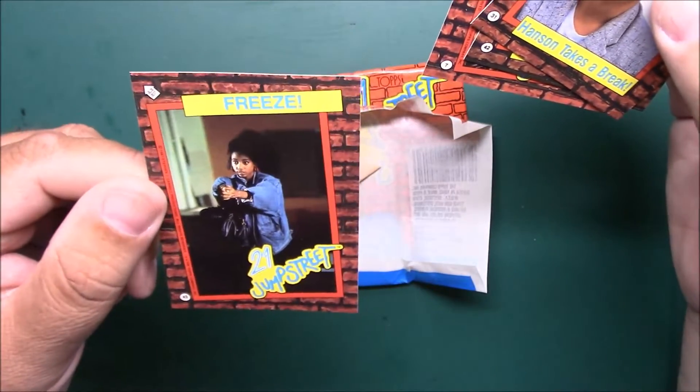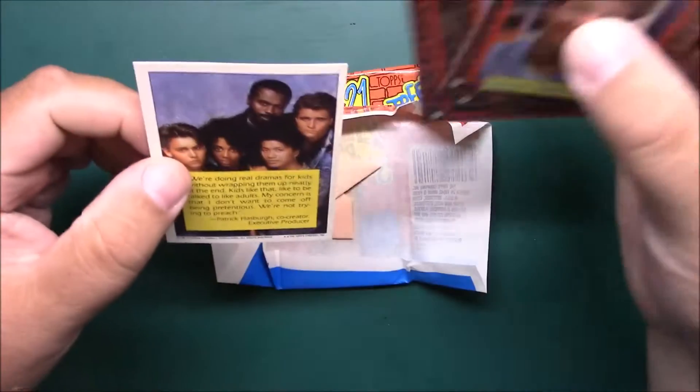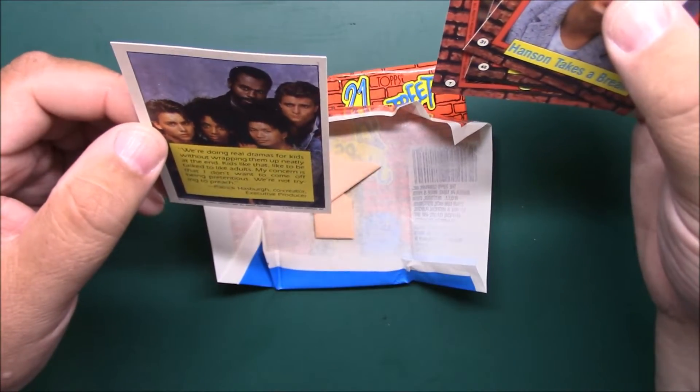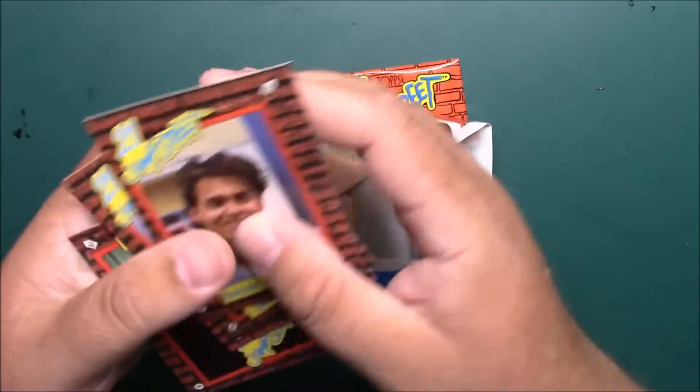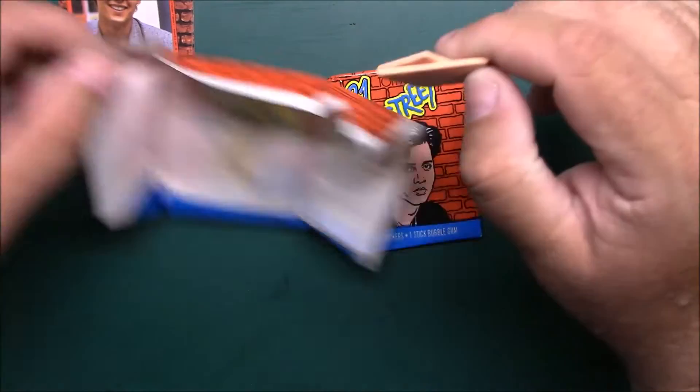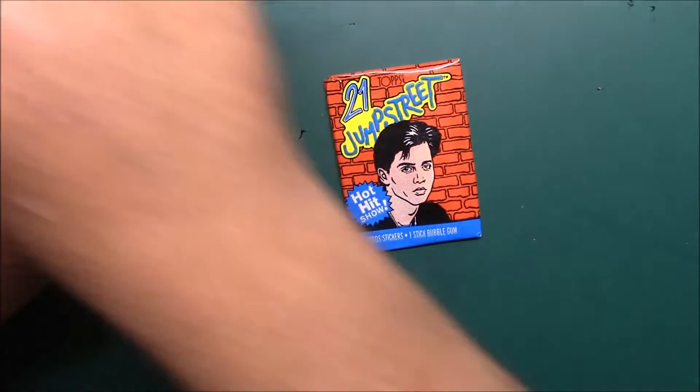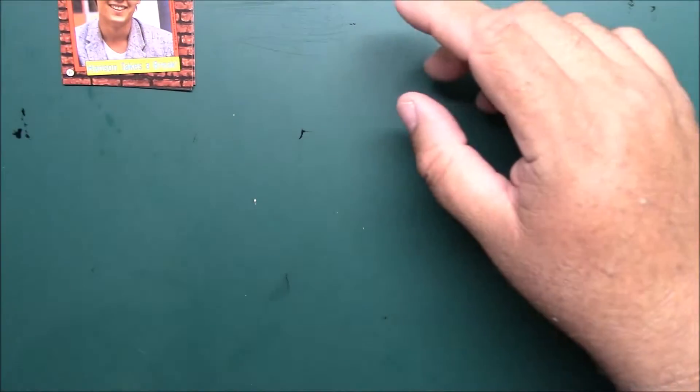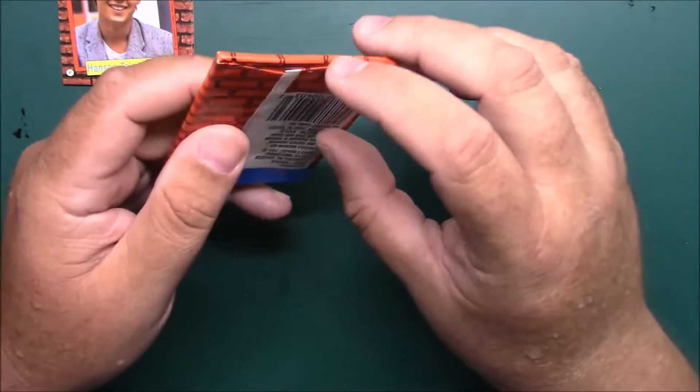And a freeze - I forget her name. She's been on some stuff too. I can't think of her name. Anyway, there's pack number one. My trash can's not by me here, can't throw the gum away. Let's go into pack number two.